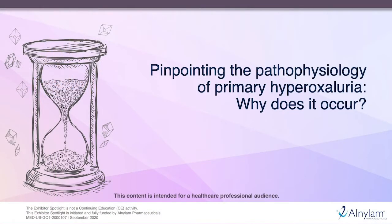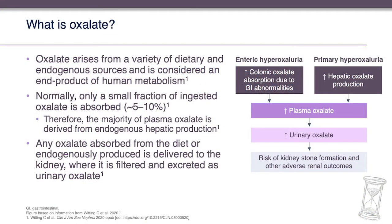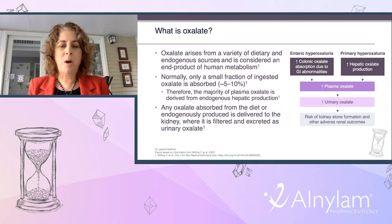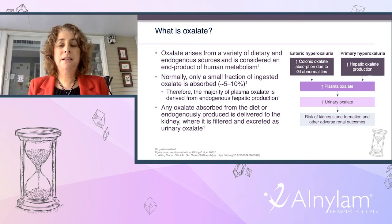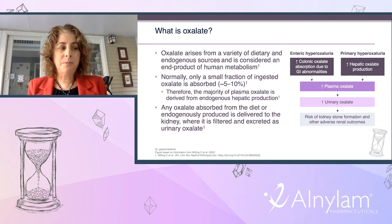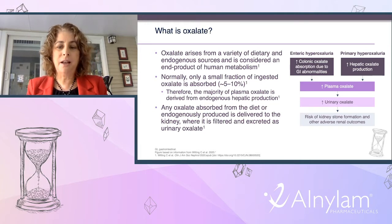This session covers the pathophysiology of primary hyperoxaluria and why it occurs. Oxalate arises from dietary and endogenous sources and is an end product of human metabolism. Normally, only a small fraction of ingested oxalate is absorbed, ranging from 5% to 10%. Therefore, the majority of plasma oxalate is derived from endogenous hepatic production. Any oxalate absorbed from diet or endogenously produced is delivered to the kidney, filtered, and excreted as urinary oxalate.